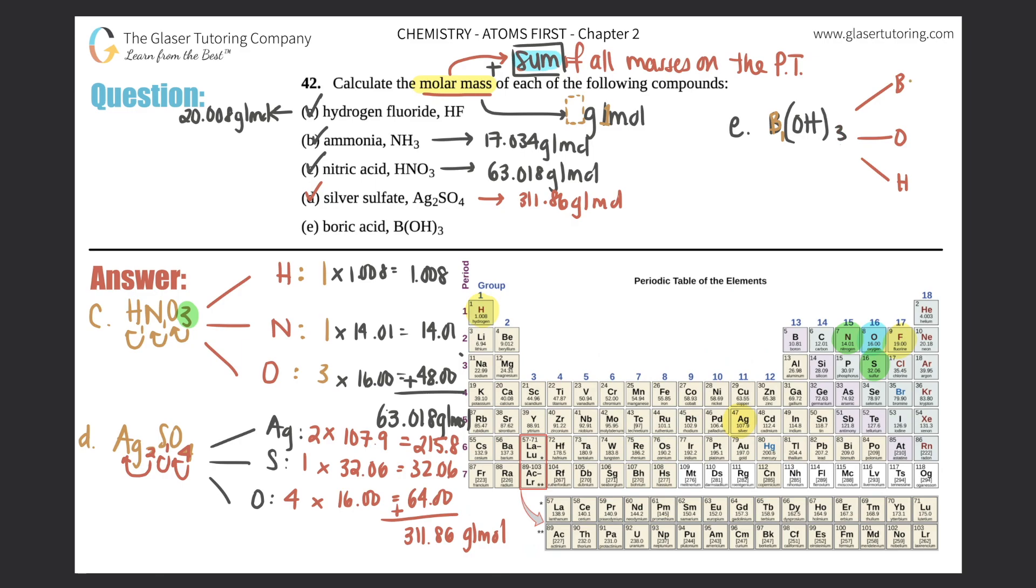How many oxygens are there? Now this is the first time that we're looking at parentheses. When there is something in parentheses, the subscript outside of it goes for everyone that's in the parentheses. So this is telling us that we have three oxygens and three hydrogens. The three gets distributed - you got to distribute it between all the elements inside of the parentheses.